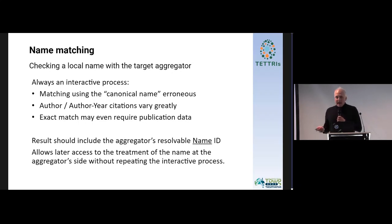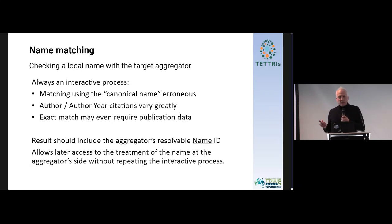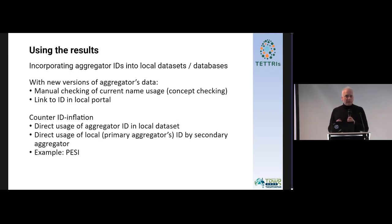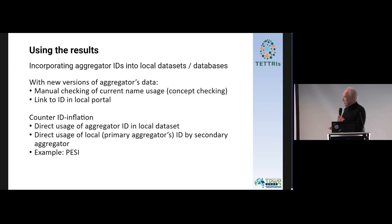If something is given back, it should have the aggregator ID in it, so that you can go back later via the ID — and not via the name string again — to actually see what has happened on the aggregator side with that name. A recommendation would be that local datasets of any size incorporate these IDs into their treatment so that they can actually go back later and see if changes have occurred, for example, in a new version of Catalog of Life or World Flora Online.